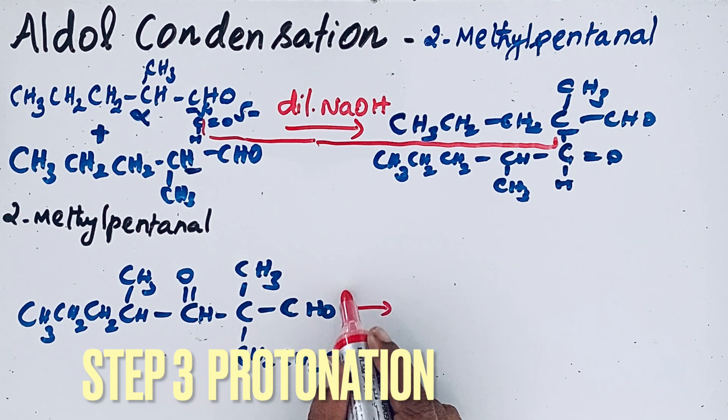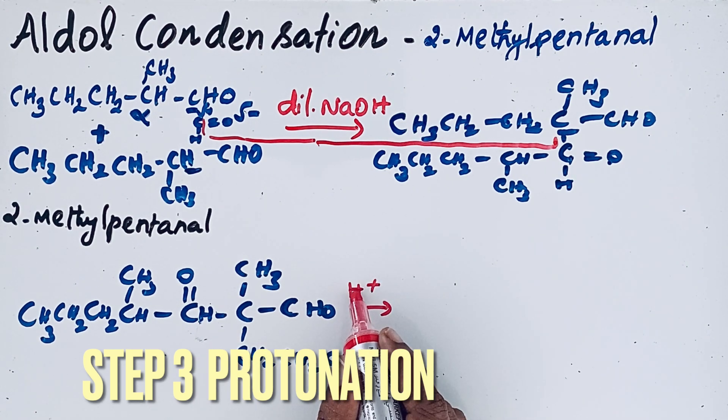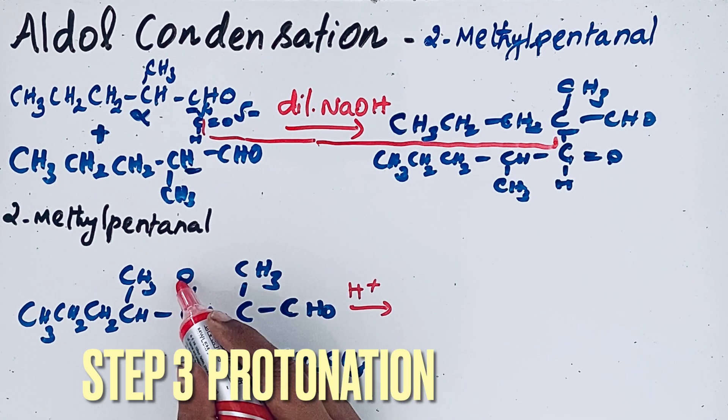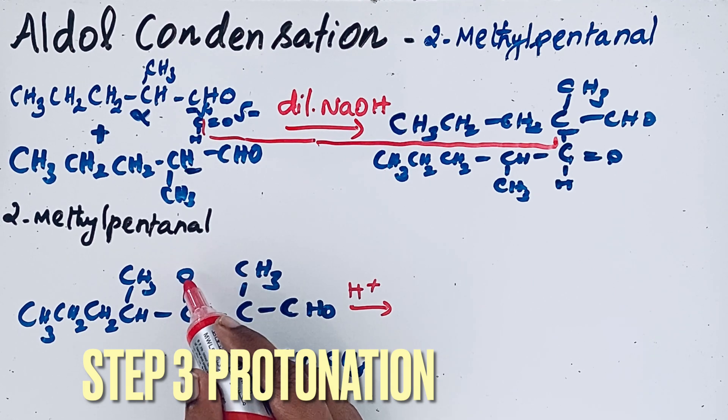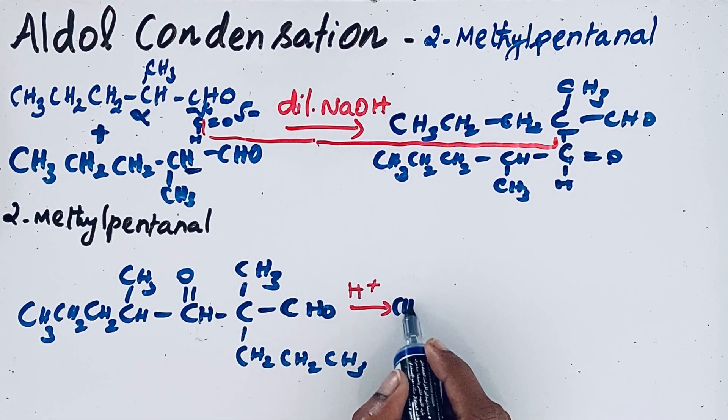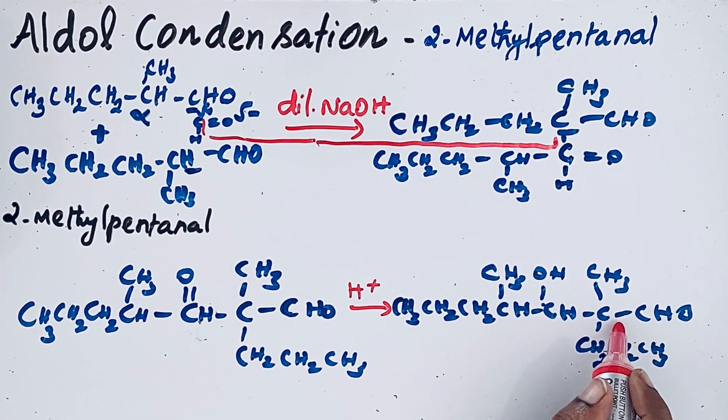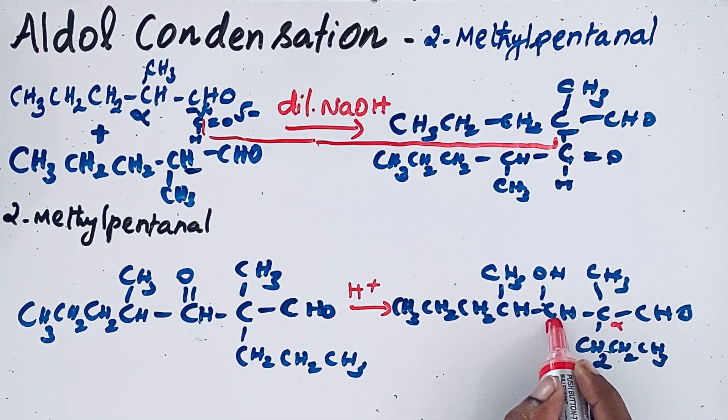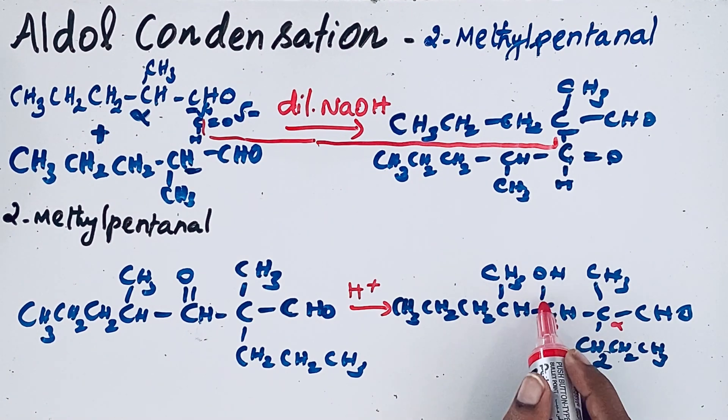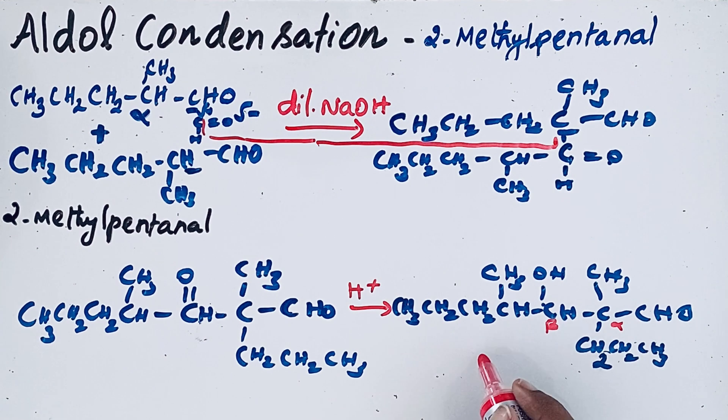So now protonation takes place, H+. So this hydrogen will attach to that oxygen and forms beta hydroxy product. This is alpha carbon and this is beta carbon. So this is the compound of beta hydroxy aldehyde. This is also called as aldol product.